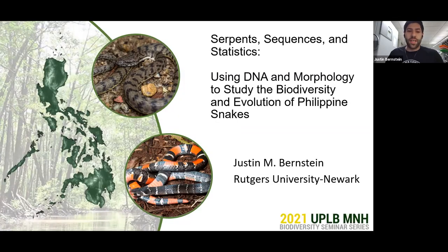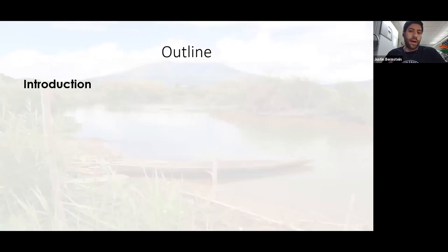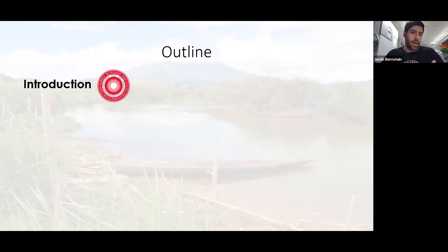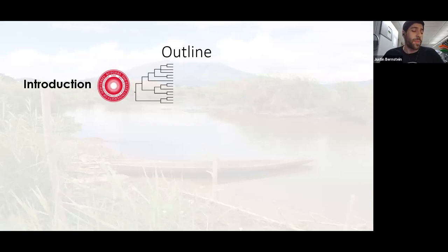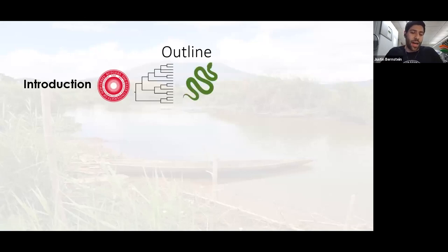I'm going to share my screen and talk to everybody about snakes — by far one of my favorite topics — and more specifically how we can look at DNA and morphology to learn more about the evolutionary histories and biodiversity of these snakes. As a small outline for this talk, I'll give a brief introduction about myself and some of the work I do at Rutgers University. I'll discuss my research aims, give a crash course in systematics, and talk about snakes — why we study them, their diversity, and the questions we can answer using snakes as systems.